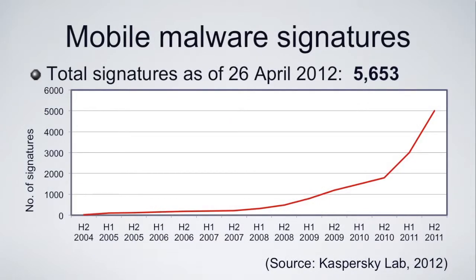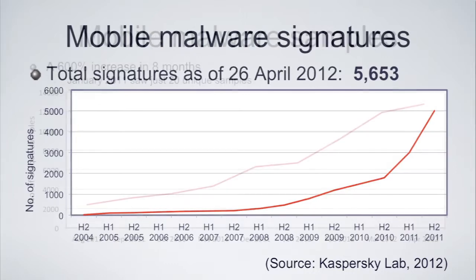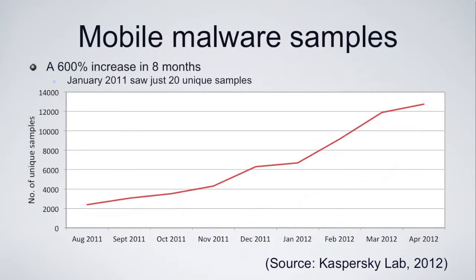Looking at the total known signatures up to April of this year, you can see significant growth in 2011 onwards. In terms of mobile malware samples, a 600% increase in eight months. In January 2011 there were just 20 unique samples; by April of this year, somewhere around 12,000 to 13,000 different malware samples.